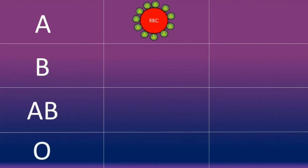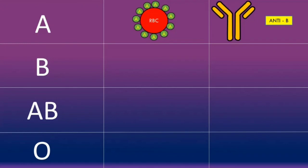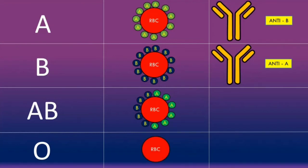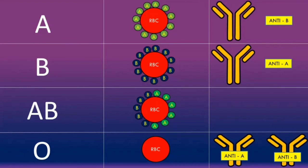To summarize the ABO blood grouping system: there are four ABO blood groups. Patients with blood type A have red blood cells with only A antigens on the surface and anti-B antibodies in their plasma. Patients with blood type B have only B antigens on their red blood cell surface and anti-A antibodies in their plasma. Patients with blood type AB have both A and B antigens on the red blood cell surface and no anti-A or anti-B antibodies in their plasma. Patients with blood type O have no A or B antigens on the red blood cell surface and have both anti-A and anti-B antibodies in their plasma.